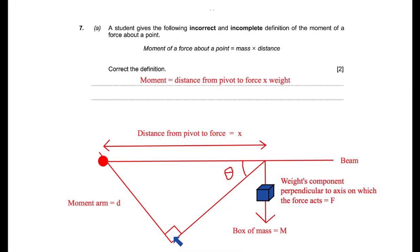So we would need to change our definition for moment to include this change. This changes the definition to moment equals the distance perpendicular from an axis to the line of action of a force times by the weight or force. So in other words, it would be this moment arm times by the force.